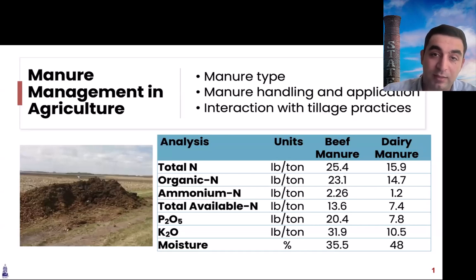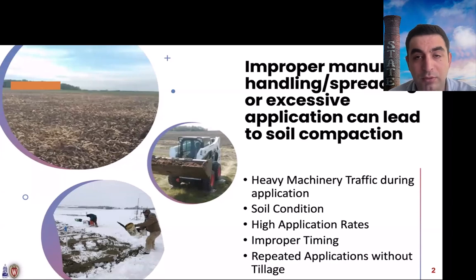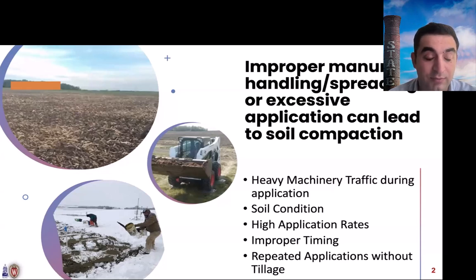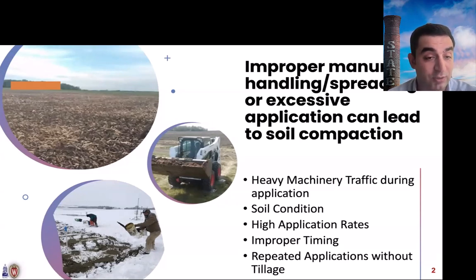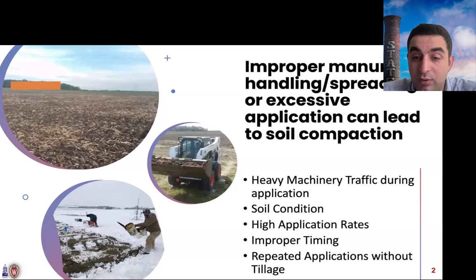Keeping manure type and handling in mind is really important. Improper manure handling or application can lead to soil compaction. It is important to consider how much field traffic you are causing, soil moisture conditions, and application rates. How you apply the manure also matters — whether you apply solid manure on the surface, incorporate it with tillage, spray it on snow in liquid form, or inject liquid manure — these are all really important factors depending on your objectives.